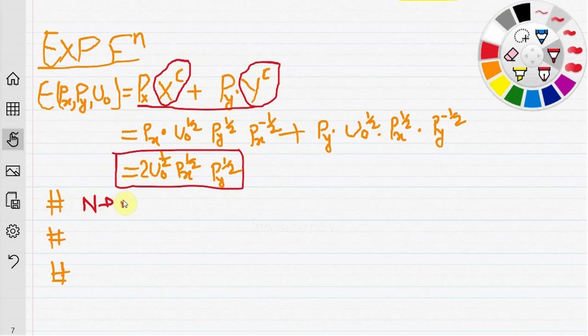The expenditure function is non-decreasing in the utility level and it is non-decreasing in prices.